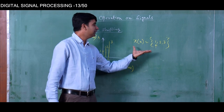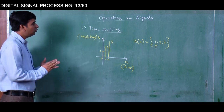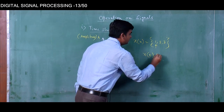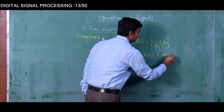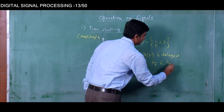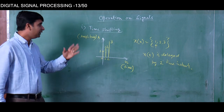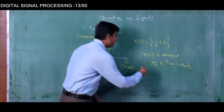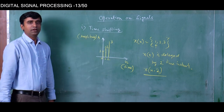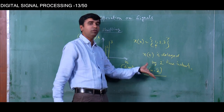Now if we want to shift this signal in time — suppose x[n] is delayed by two time instants — how do we write that? In expression form, the signal which is delayed by two instants will be written as x of n minus 2.